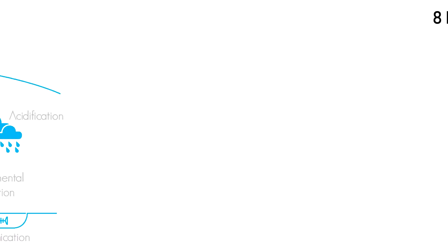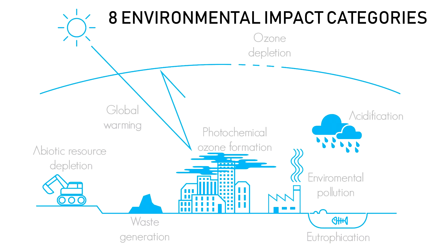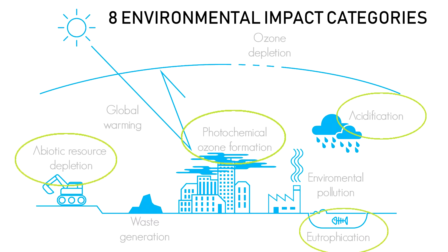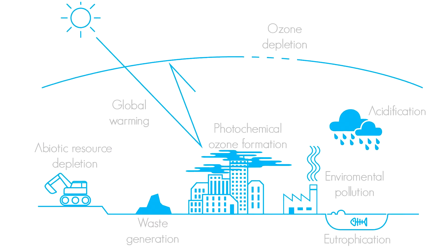These environmental declarations take into account eight environmental impact categories such as the formation of photochemical ozone, the acidification of the environment, eutrophication, or the depletion of abiotic resources.